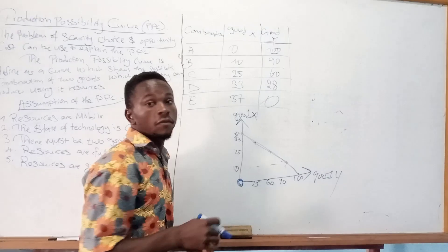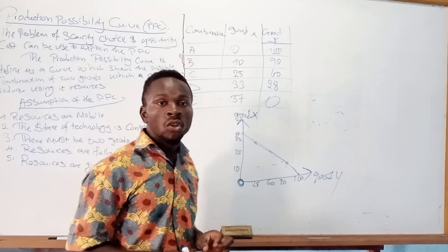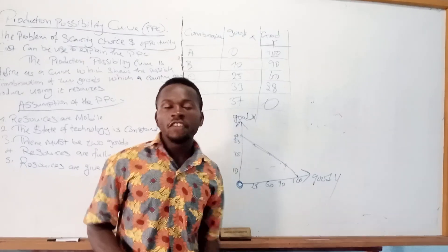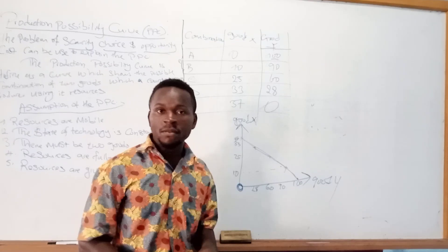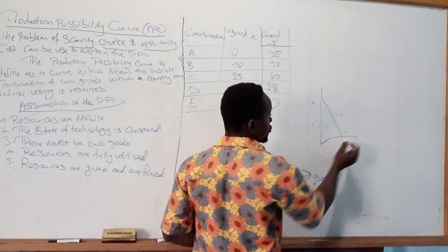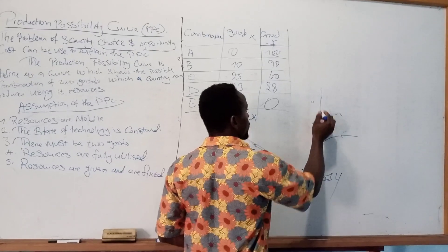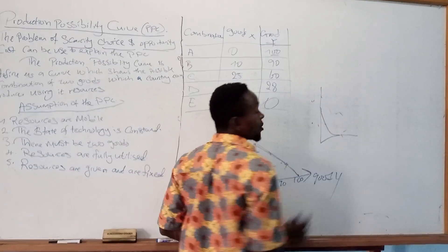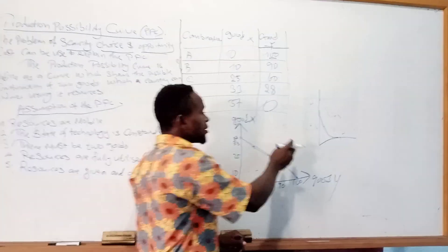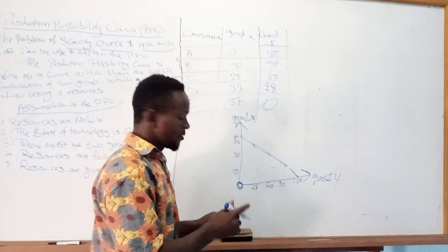Our diagram has been drawn. Remember, we have three types of PPCs. We have the straight line PPC, we have the concave PPC, and then we have the convex PPC. What we have drawn here is known as the concave PPC.